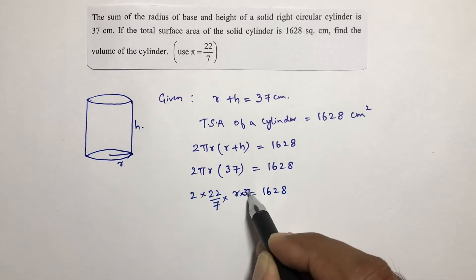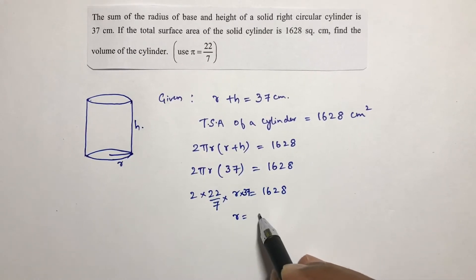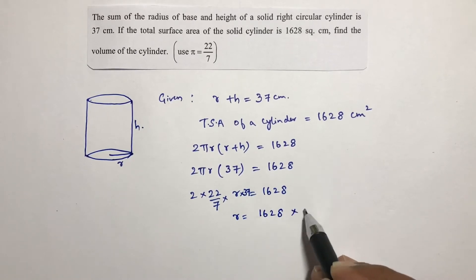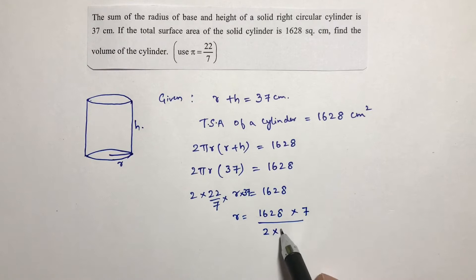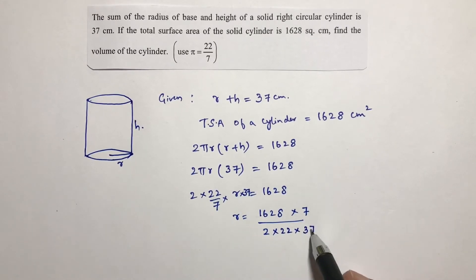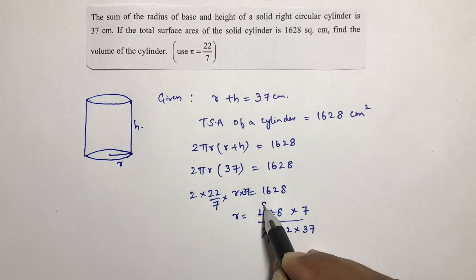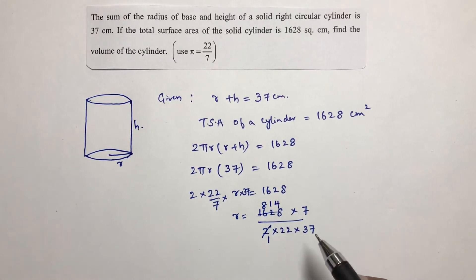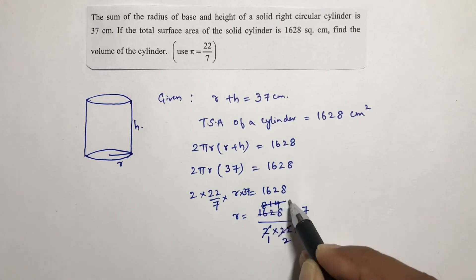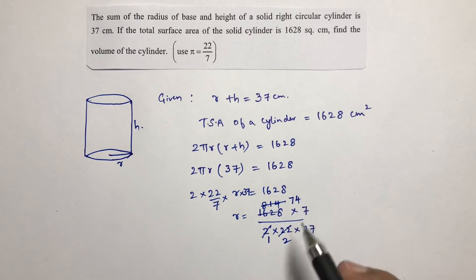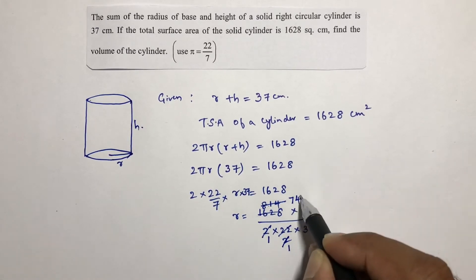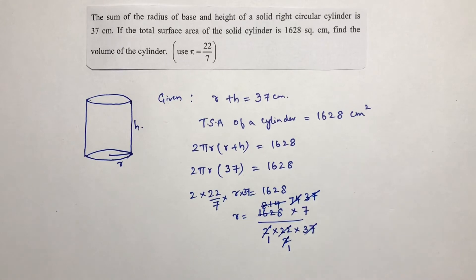So radius equals 1628 times 7 divided by 2 times 22 times 37. Cancelling these values — 2 cancels, then in the 11 table: 11 times 7 is 77, leaving 4 in the numerator and 44 in the denominator — so r equals 7.